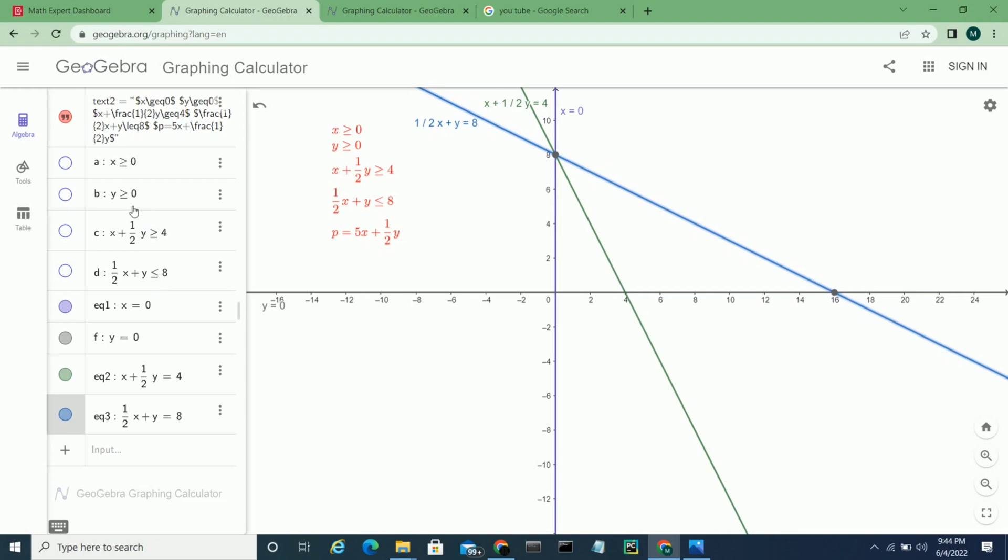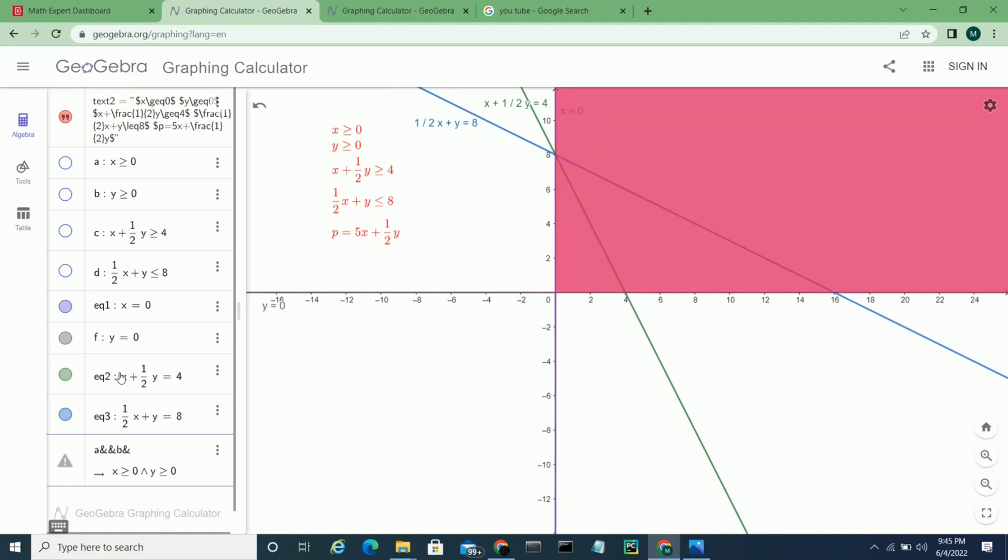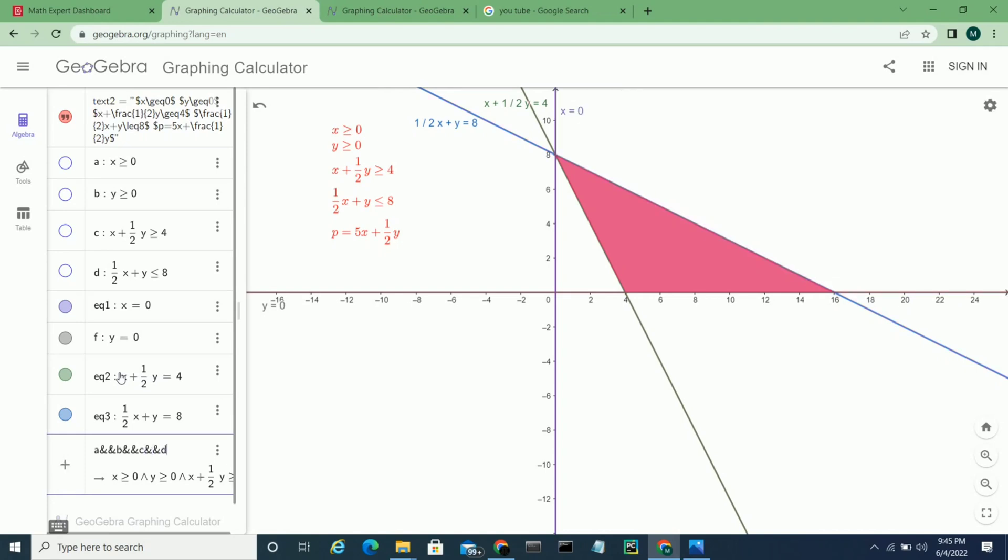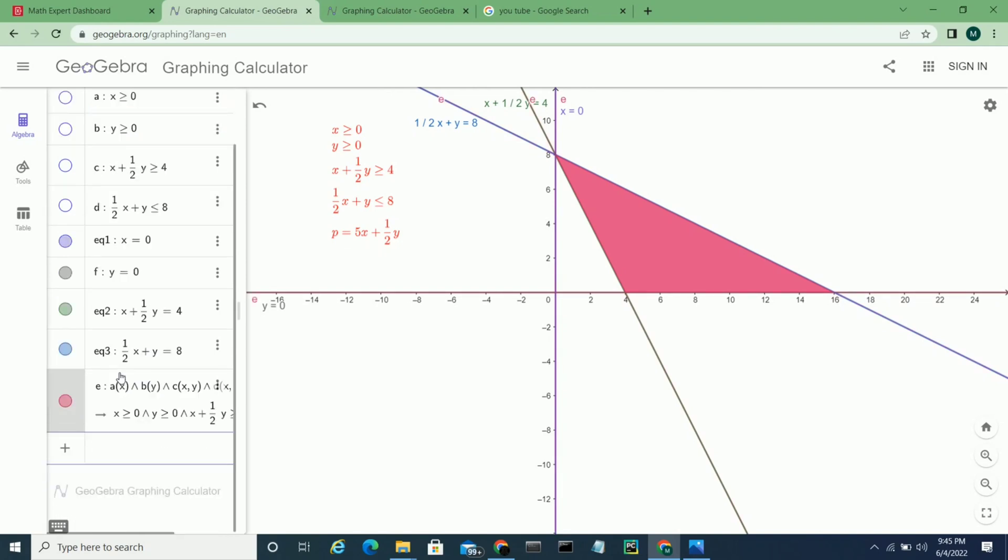Now we will find the common area which satisfies all these inequalities. Let's get started. We type a, because a is corresponding to x greater than or equal to 0, and 'and' sign means intersection or common. So a and b means a region common with b, and c, and then d. So we get this common region which satisfies all conditions.